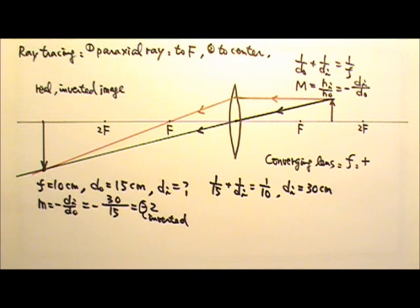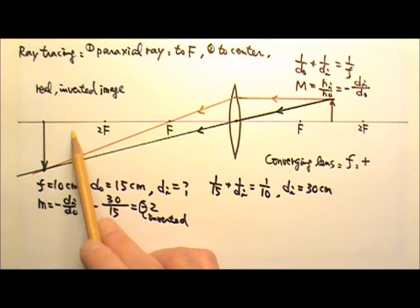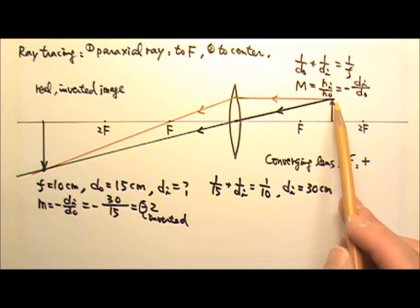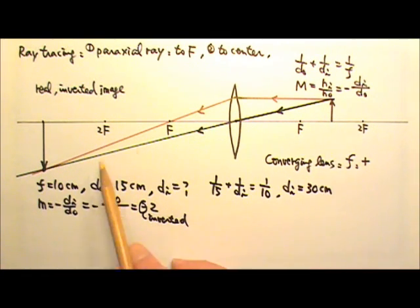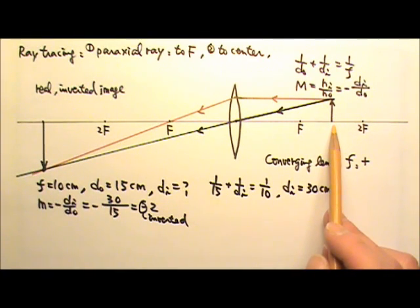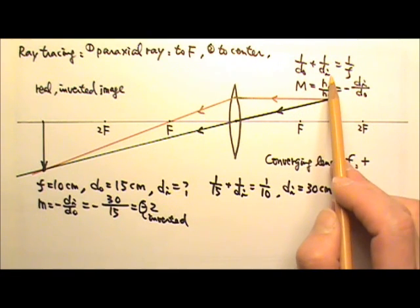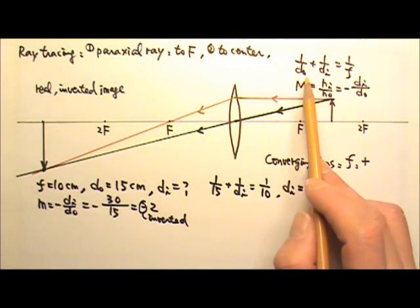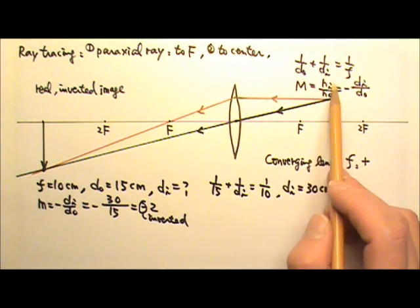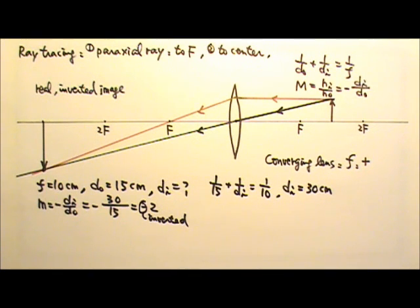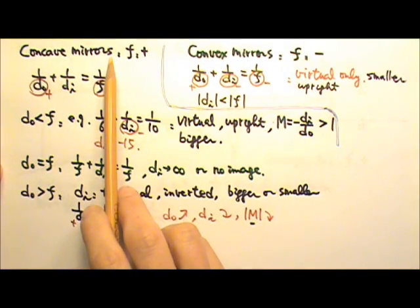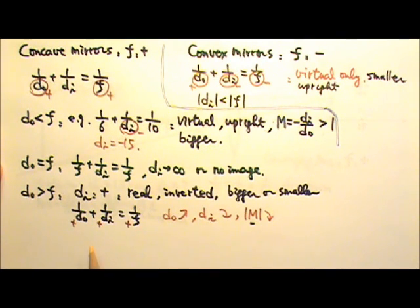Another thing is that because light rays are retraceable, if this is the object in front of the lens, light rays follow these paths and form an image over there. Then if the object is placed there, light rays follow the same path backwards and form an image over here. If the object is here the image will be there, and if the object is there the image will be here. That's why DO and DI are interchangeable in the mirror-lens equation — but of course this is only true for real images when both DO and DI are positive, because only real light rays are retraceable; light ray extensions for virtual images are not retraceable. So everything we talked about for concave mirrors can be used for converging lenses — all these image properties apply.